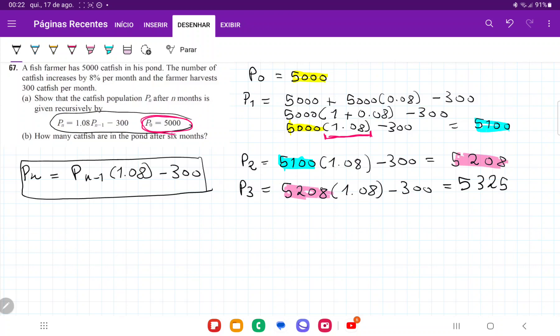And then for B, it wants how many catfish are in the pond after six months. So since we don't have the general formula that tells us, just put n and it'll give you after six months, it only tells us recursively. So that means that we need to keep building it up.